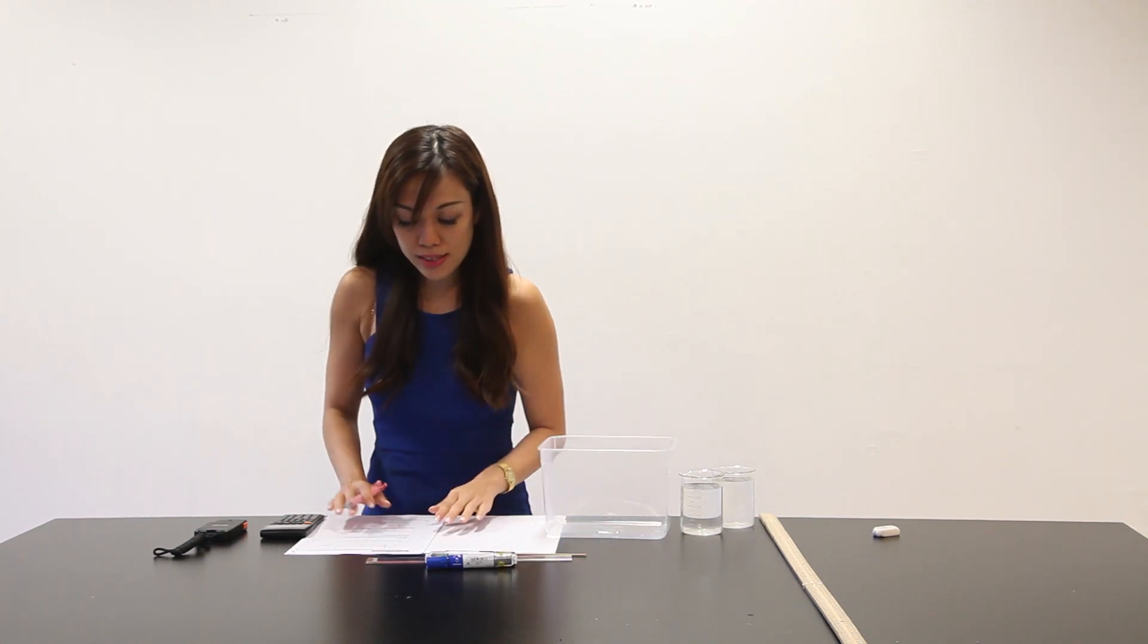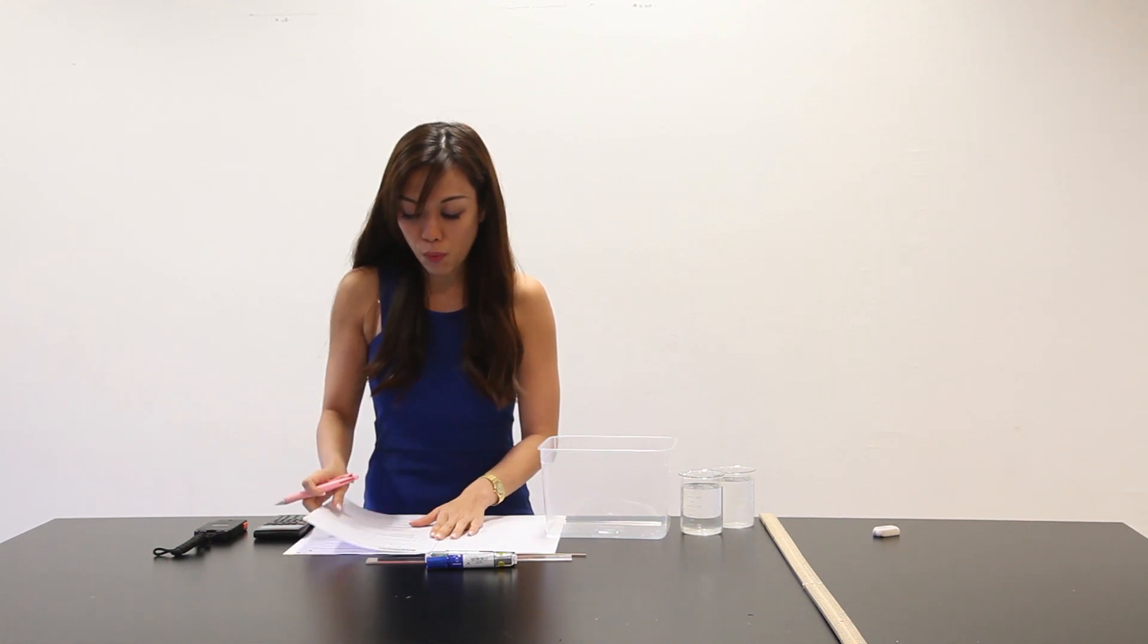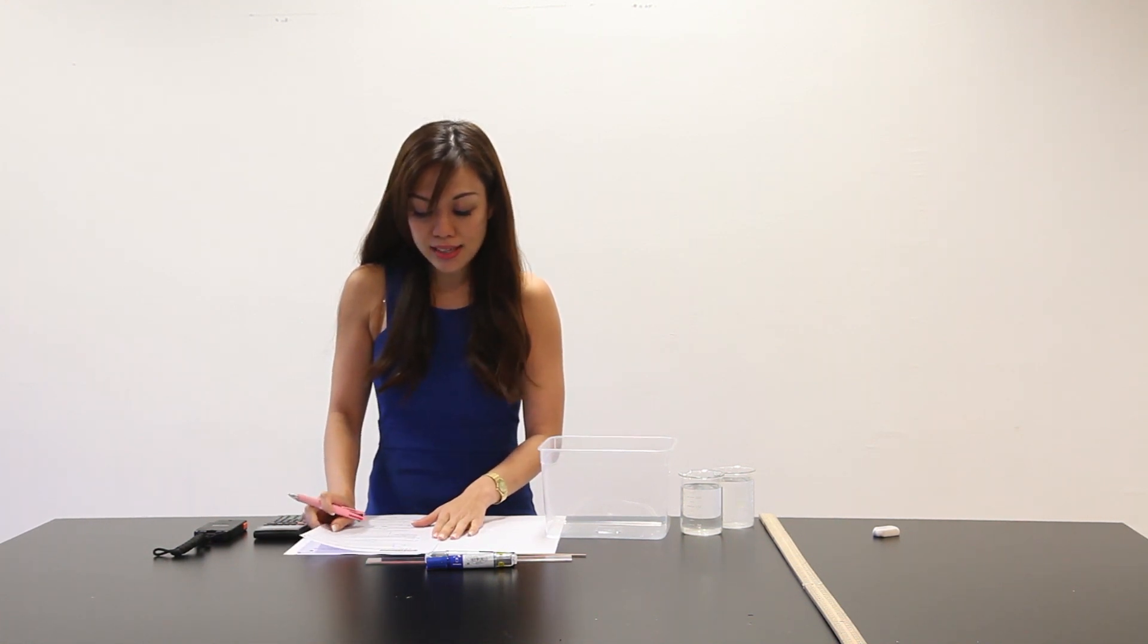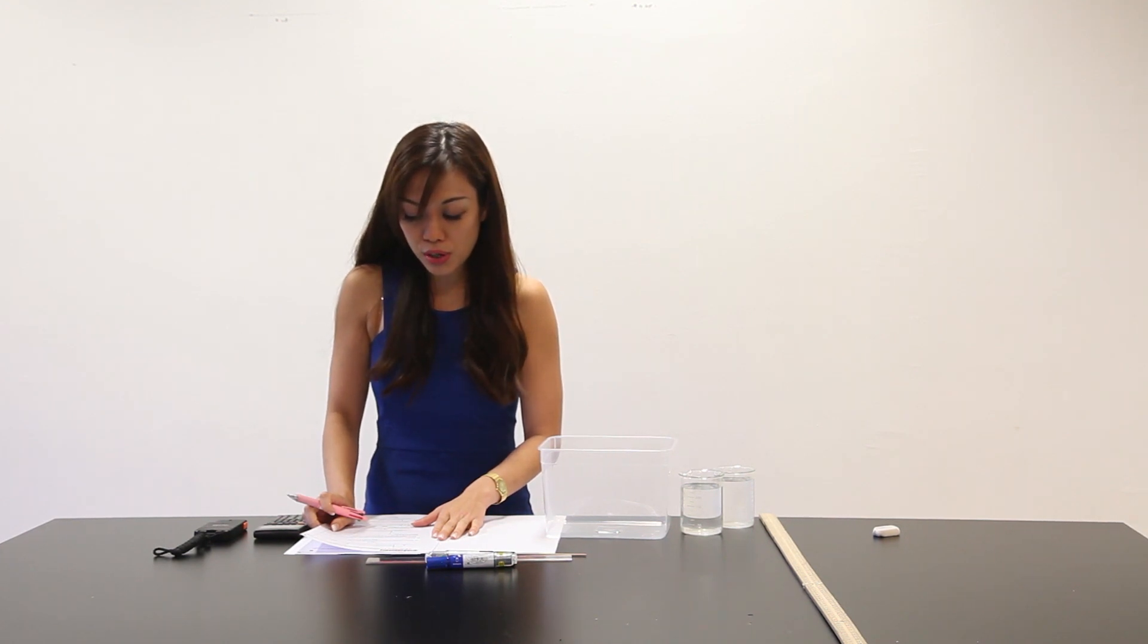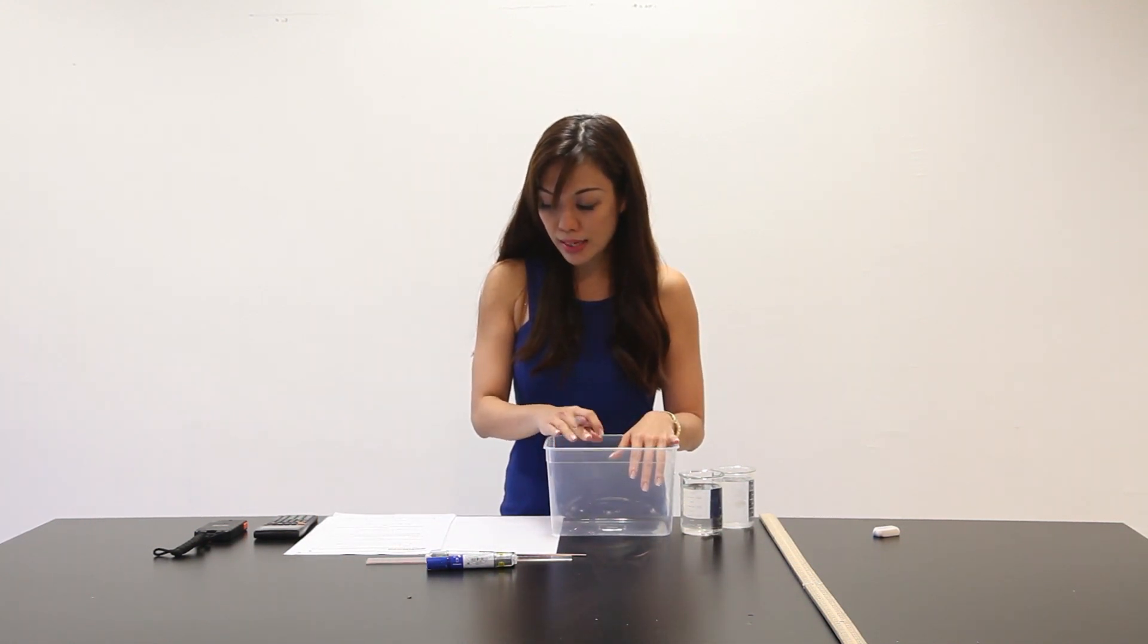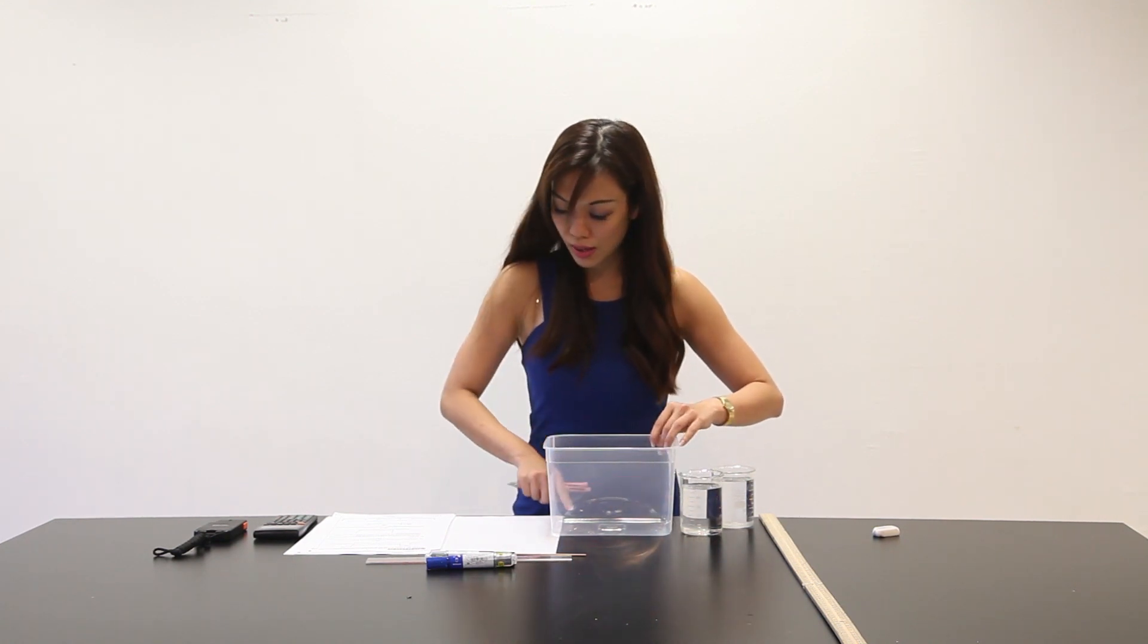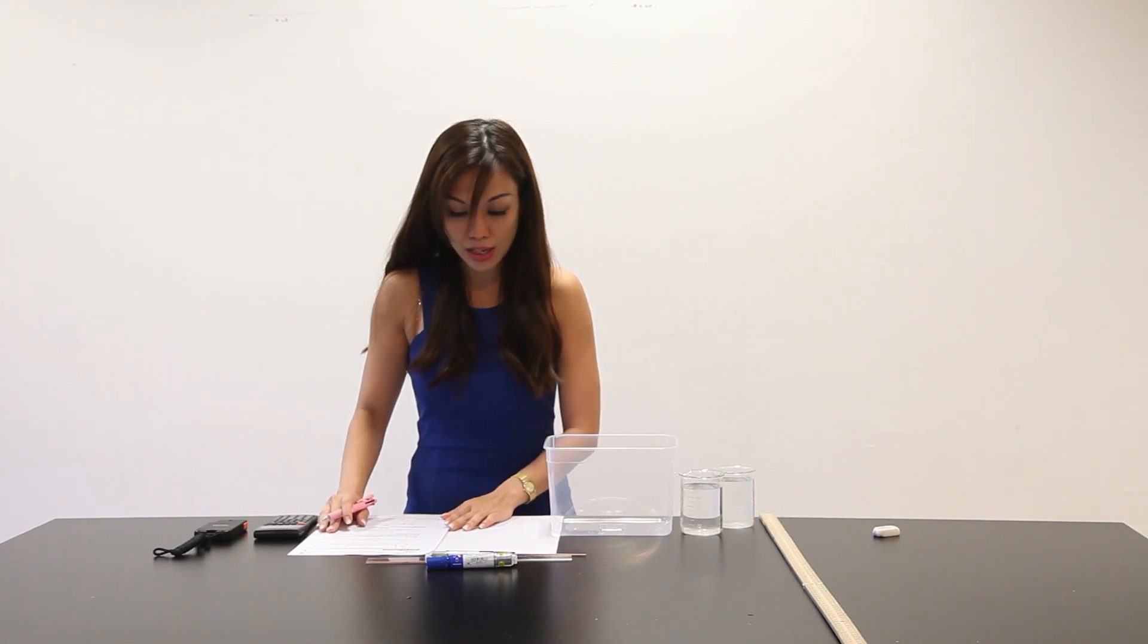Now, the question here says in this experiment, you will investigate how the speed of a water wave changes as the depth of the water is altered. To do this, you will use the apparatus as shown in figure 1.1. This is the tray that you are given. There will be water placed inside and this is the length L from here to here. Measure the length of the tray L and record this value in mm.